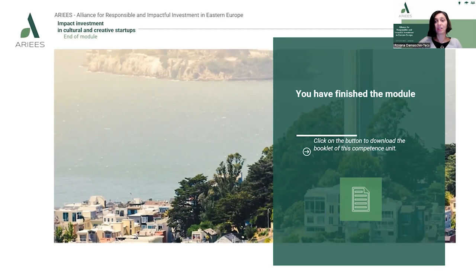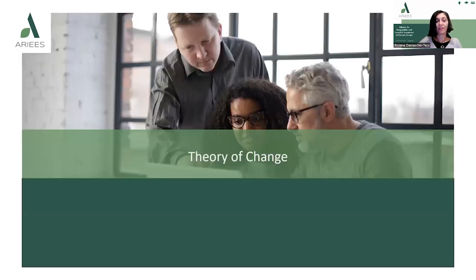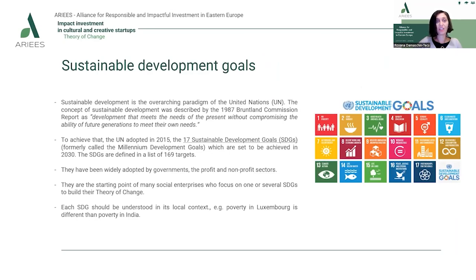You've finished this module on defining impact. The next module refers to the theory of change. Before diving deep into what theory of change is, let's talk about the Sustainable Development Goals. The concept of sustainable development traces back to the United Nations and was described for the first time in 1987 as development that meets the needs of the present without compromising the ability of future generations to meet their own needs. In 2015, the United Nations adopted 17 Sustainable Development Goals, known as SDGs.